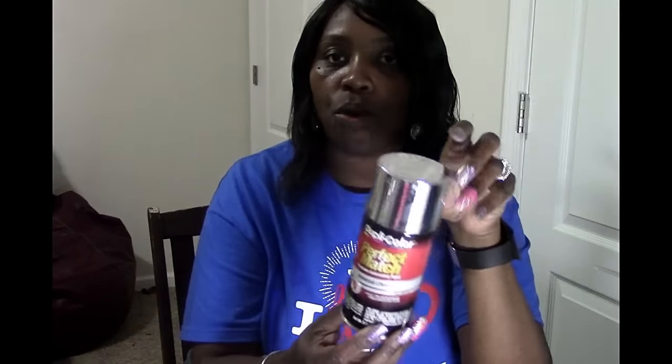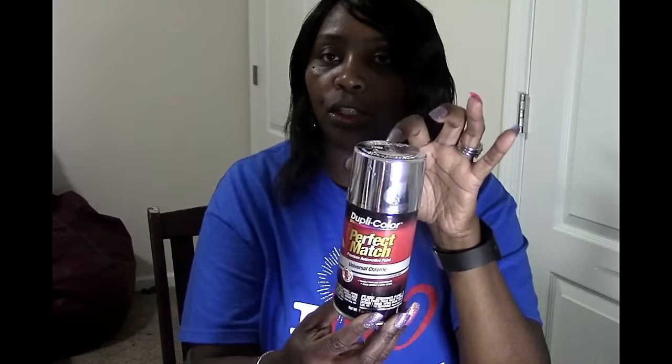Once you have your circle and your blocks, you want to take them outside. With the circle you're just going to cover the two inches around here, you don't have to do the whole thing. Then with your blocks you want to give them two coats of the DupliColor Universal Chrome or whatever chrome color you use. Now I'm going to tell you the reason why you have to use chrome as well as a metallic.